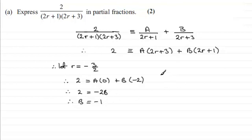Okay, so we've got B. Now we'll just try and get A. And we can do that by making this bracket equal 0. And that will be when r equals -1/2.